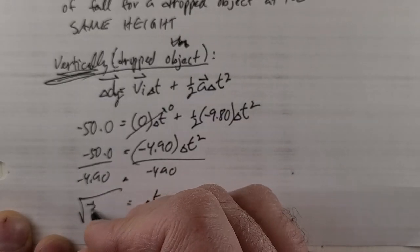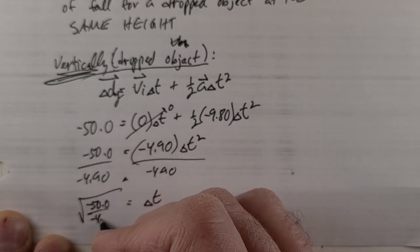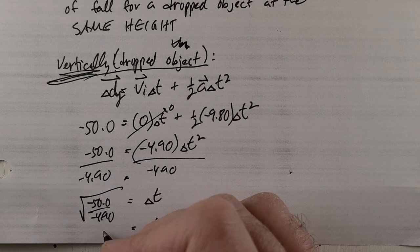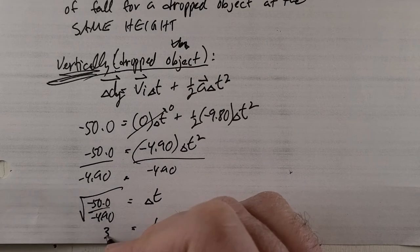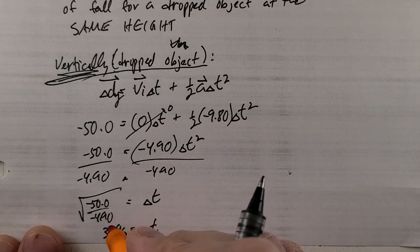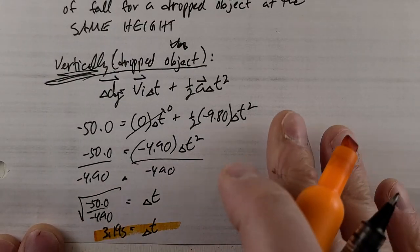If t² equals this, then t equals the square root of negative 50 over negative 4.9. Δt works out to be, to three sig figs, 3.19 seconds. So one, two, three—hits the ground. Makes sense.